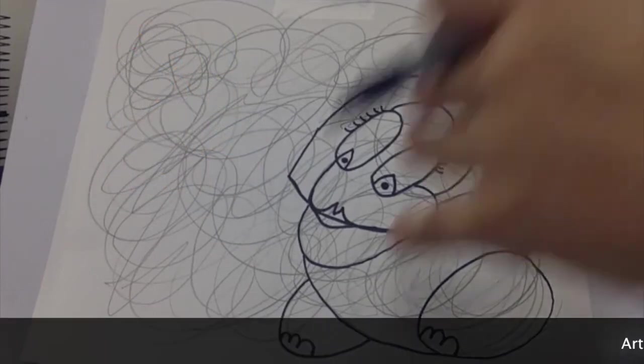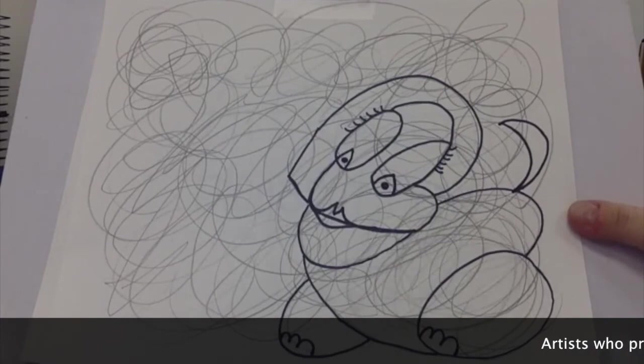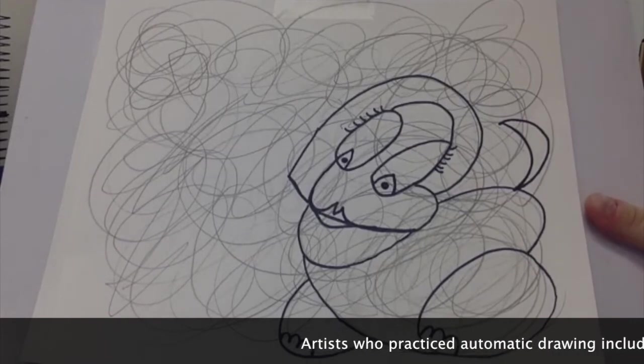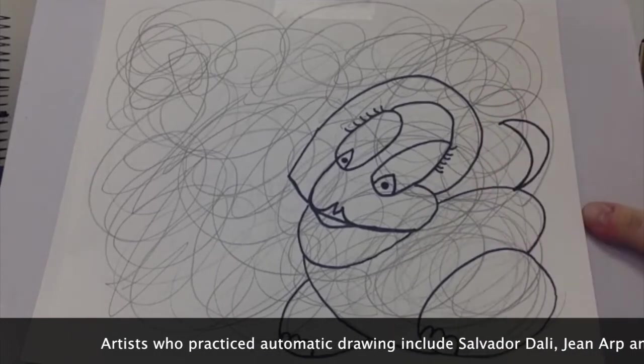So then I say, well, I have all this open space. What else can I see? And then I would encourage the child, the student, to find other things that might be hiding inside those scribble lines. It doesn't necessarily have to be a creature.